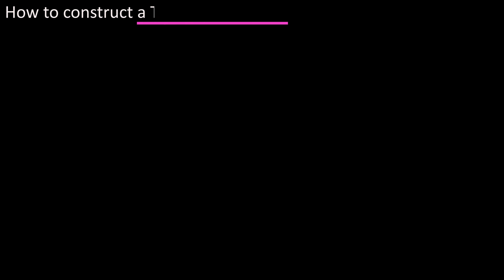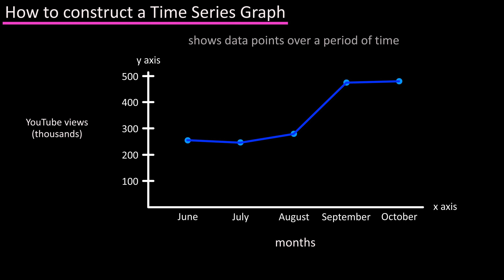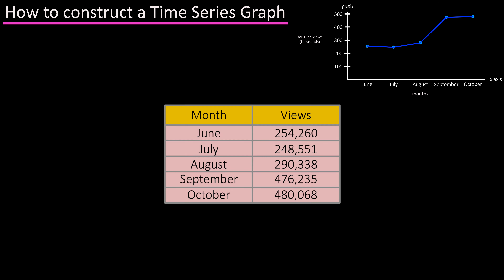In this video we're going to go over what a time series graph is and how to construct a time series graph. A time series graph is a graph that shows data points over a period of time. For instance, you could construct a time series graph for the data in this table.